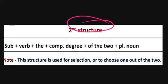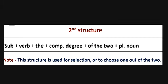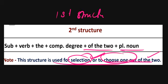The second structure is: subject plus 'the' plus comparative degree plus 'of the two' plus a plural noun. Here we use it to select or choose one from two. For example: 'This player is the better of the two players.' We choose one player from the two.